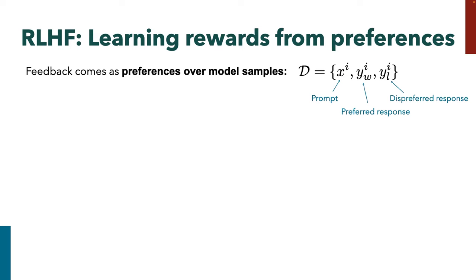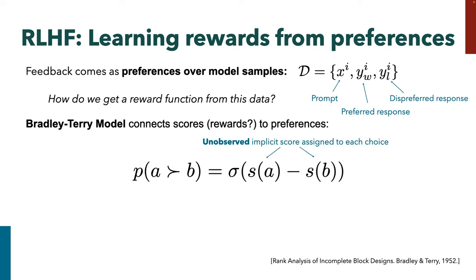This feedback comes as preferences over model samples. We did the supervised fine-tuning step, so our model roughly does the things we care about. We take a dataset of unlabeled prompts, collect two model samples from each prompt, put them in front of humans, and the human says 'that one's better.' We end up with a dataset of triples (x, y_w, y_l) where y_w is the preferred or 'winning' response and y_l is the loser. The question is: how exactly do we use this to learn a reward?